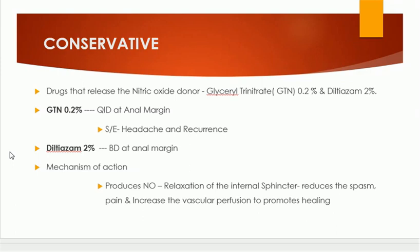GTN 0.2% is used four times a day at the anal margin. Side effects of GTN include headaches, and there can also be recurrence. Diltiazem 2% ointment is used twice a day applied at the anal margin. The mechanism of action of these agents is production of nitric oxide, which leads to relaxation of the internal sphincter, reduces sphincter spasm, relieves pain, and increases vascular perfusion in the area, promoting healing.